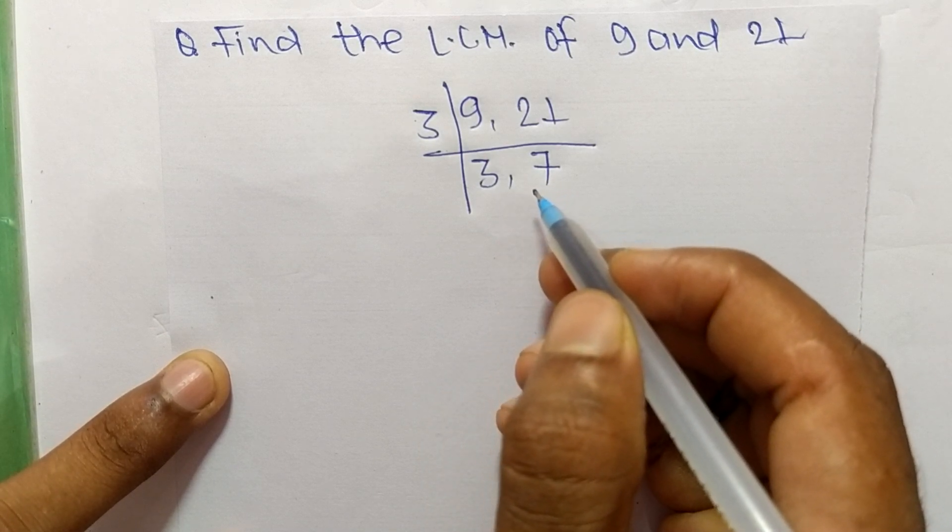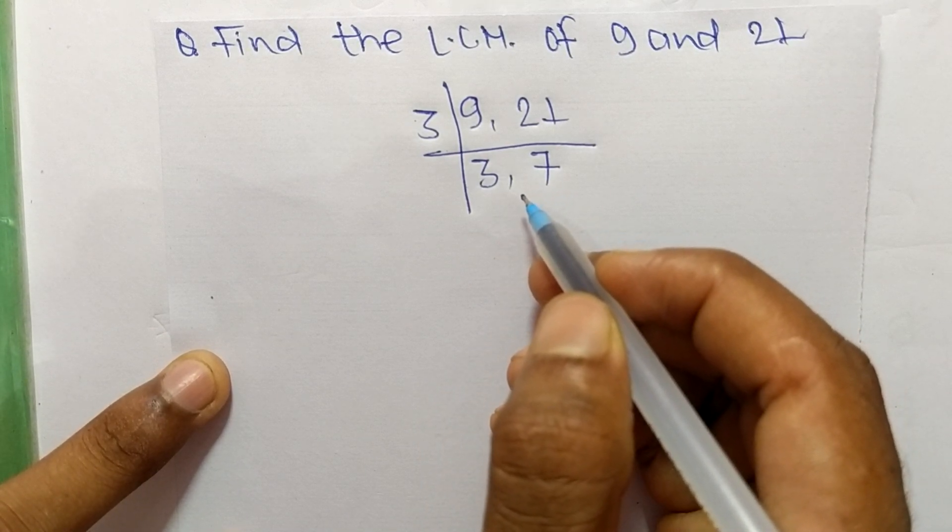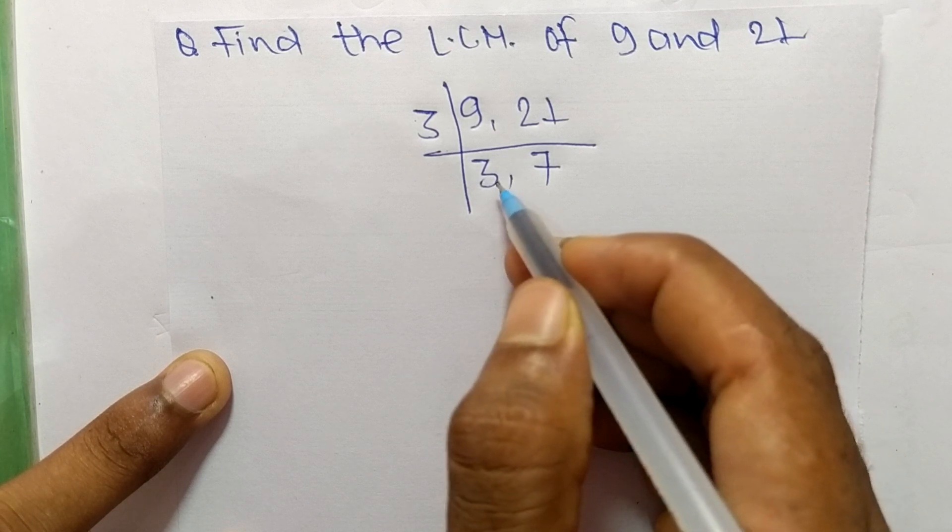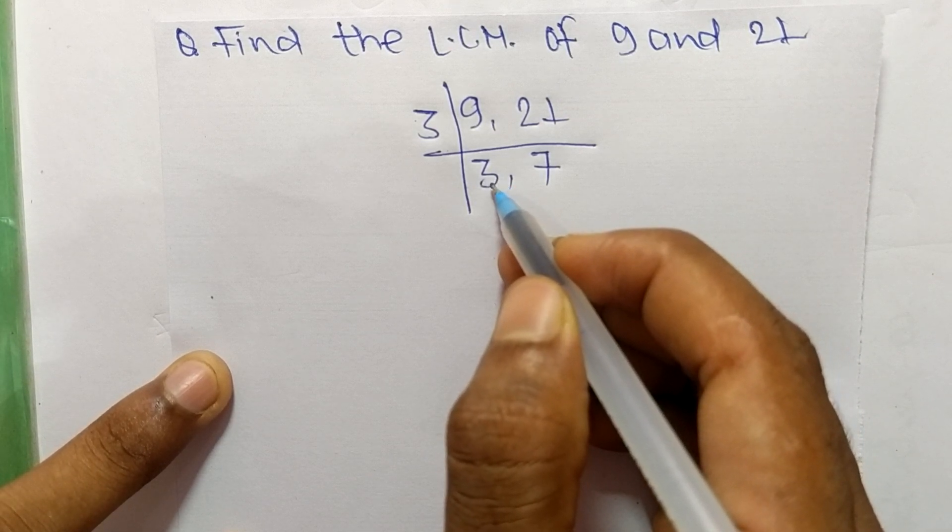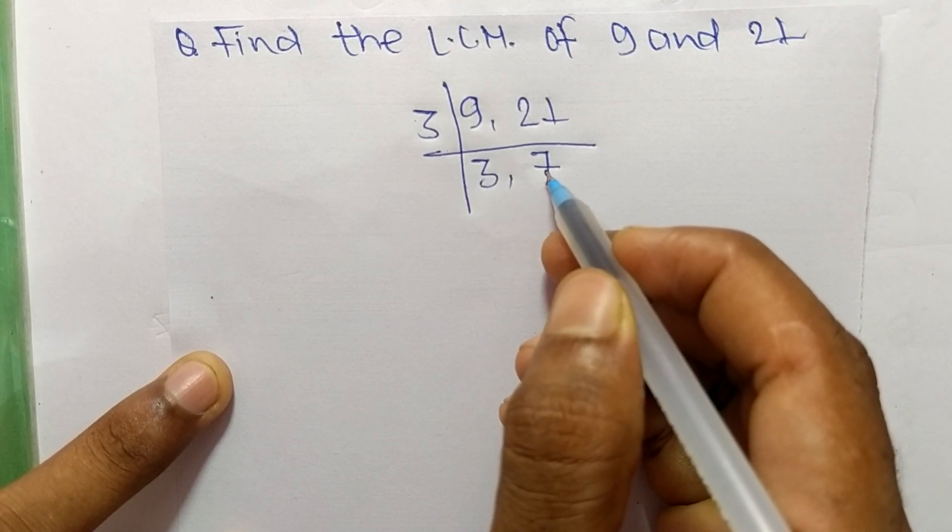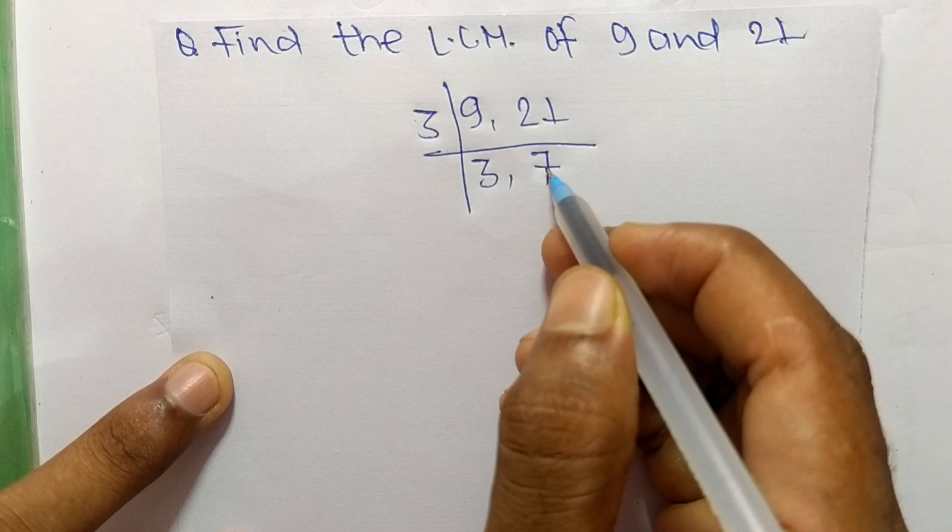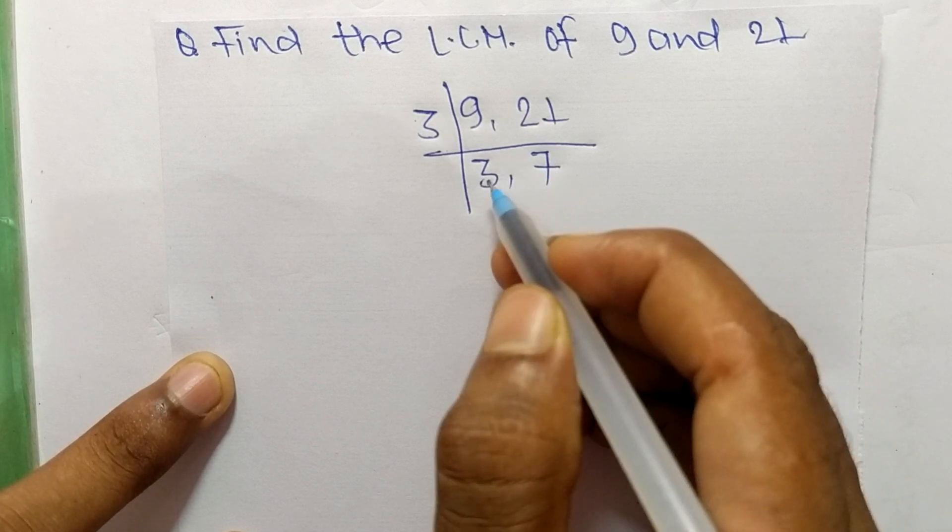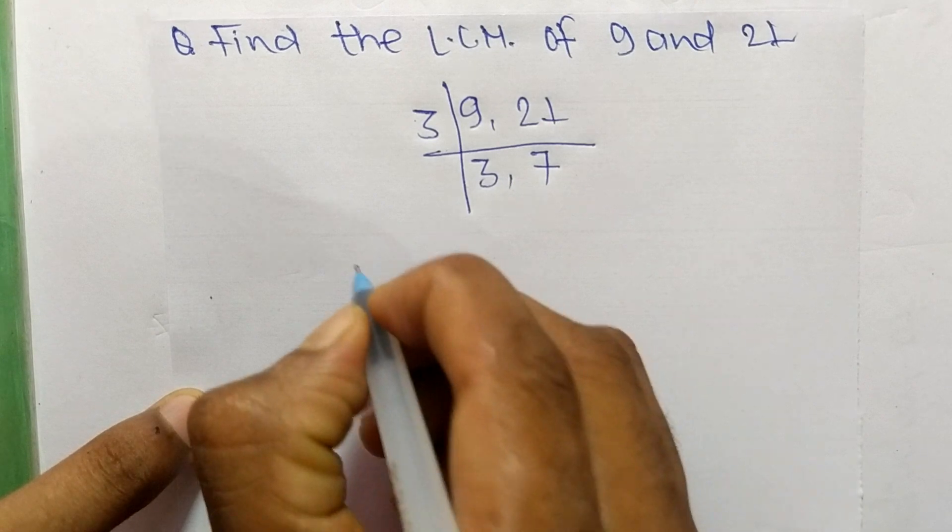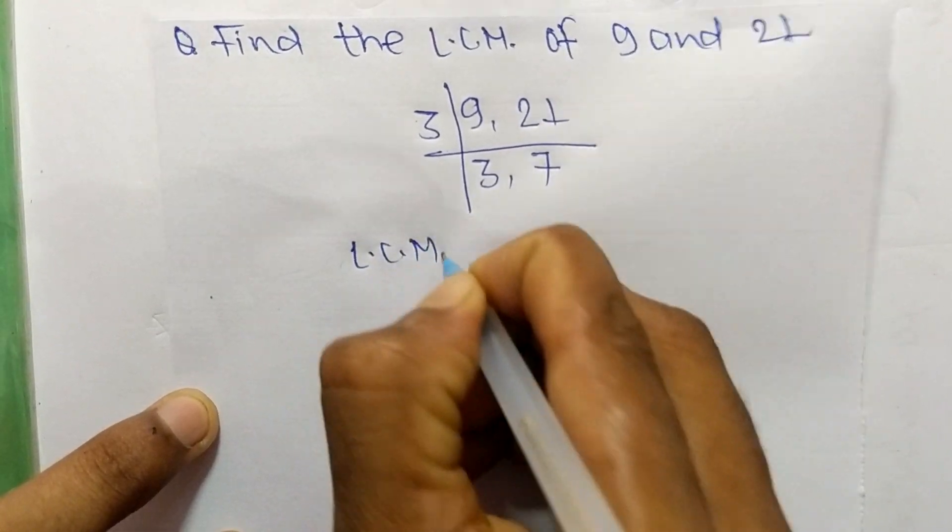These are not exactly divisible by the same number. If we take 3, then it can divide 3 but can't divide 7. And if we take 7, then it can divide 7 but can't divide 3.